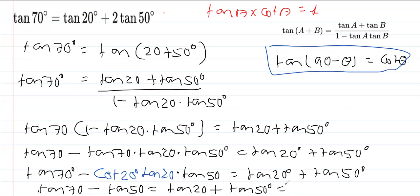Now in the final step, we are going to keep these two tan together by transposing tan 50° minus tan 50° to the right-hand side. At the end we are going to get tan 70° is equal to tan 20° plus 2 times tan 50°, and that is what the RHS of this question is.